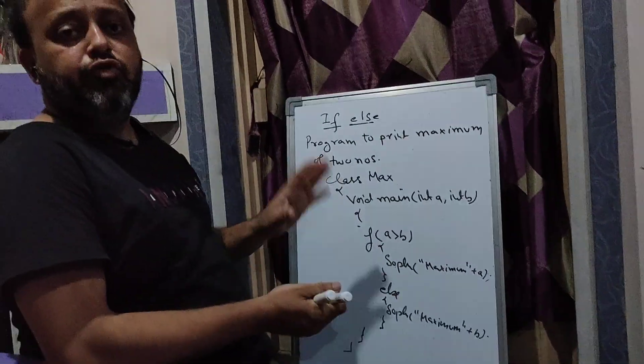This comparison is done using a relational operator. The relational operators we will be using are: greater than, less than, greater than equal to, less than equal to, not equal to, and double equals which checks whether two values are equal or not. This is a program to print the maximum of two numbers.